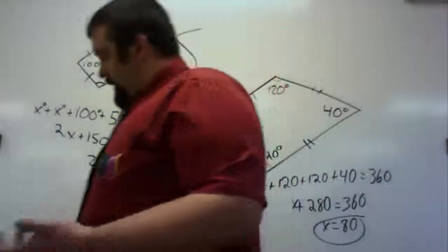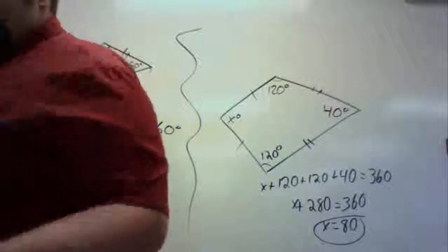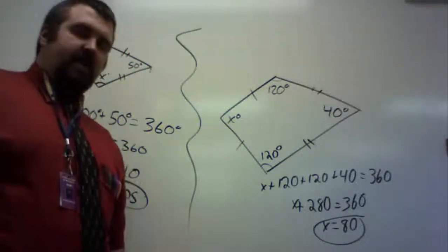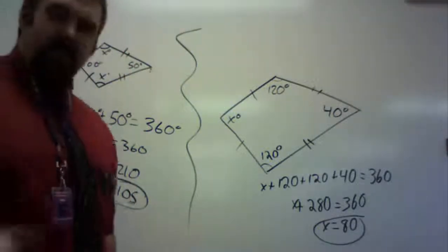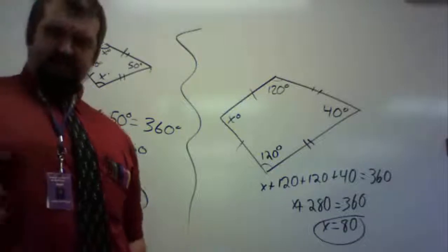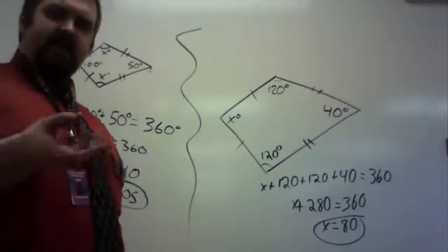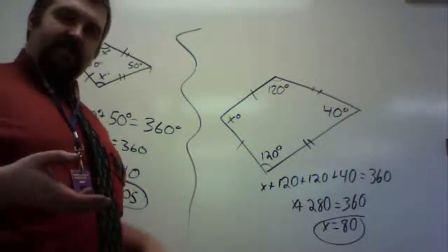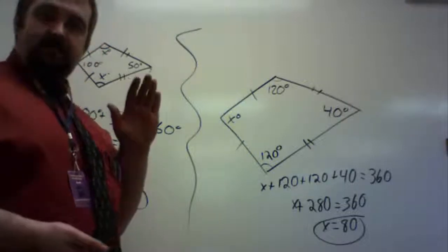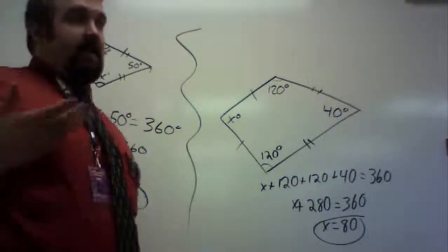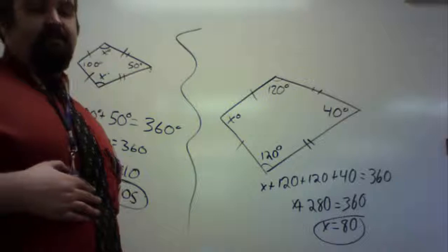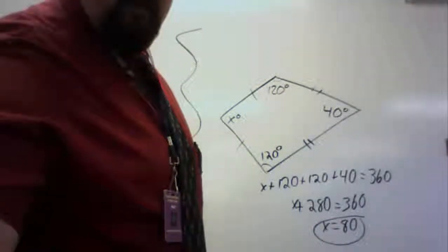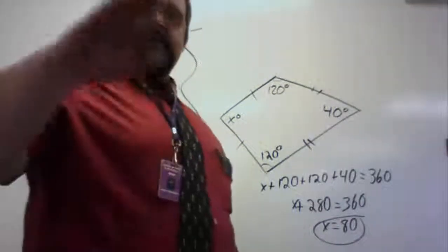These are the most difficult problems you'll probably see with kites. The toughest part of this section is the mid-segments. Know that a mid-segment of a trapezoid is half the sum of the bases and is parallel to the bases, and you've pretty much got this section. That's all for today — till next time.